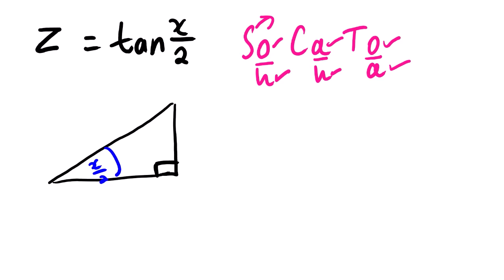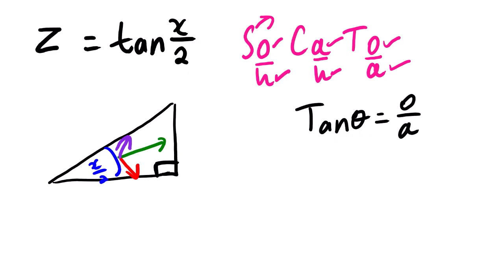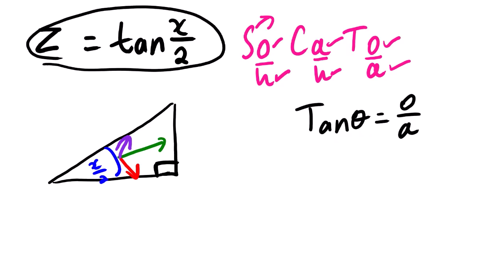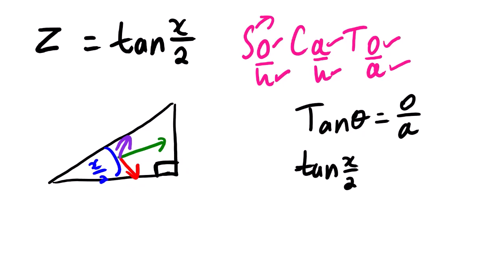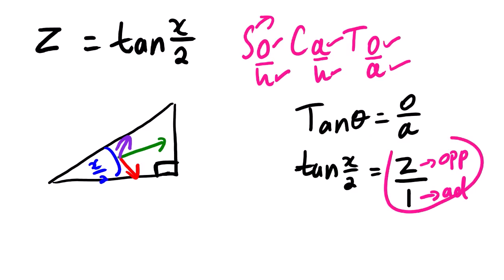From here we identify the opposite side, the adjacent side, and the hypotenuse. We know that according to SOHCAHTOA, tan(theta) is equals to opposite over adjacent. Since we have tan(X/2) = Z, the value of theta is X/2, and our ratio opposite over adjacent gives us Z over 1. So Z is our opposite side and 1 is our adjacent side. We can now fill these values into our right angle triangle.